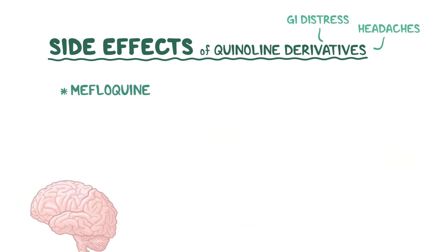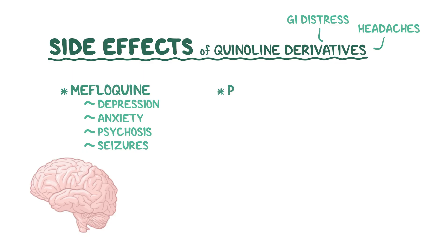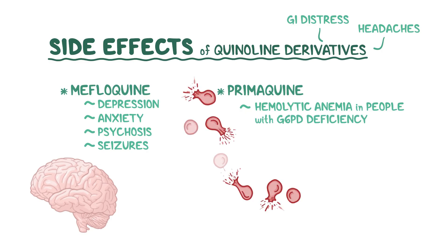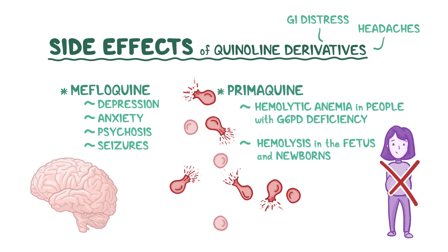Mefloquine, on the other hand, can cause neuropsychiatric side effects like depression, anxiety, psychosis, and seizures. Finally, primaquine could cause life-threatening hemolytic anemia in people with G6PD deficiency, where the red blood cells lack a specific enzyme that protects them from oxidative stress. It also causes hemolysis in the fetus and newborns, so it's contraindicated during pregnancy.